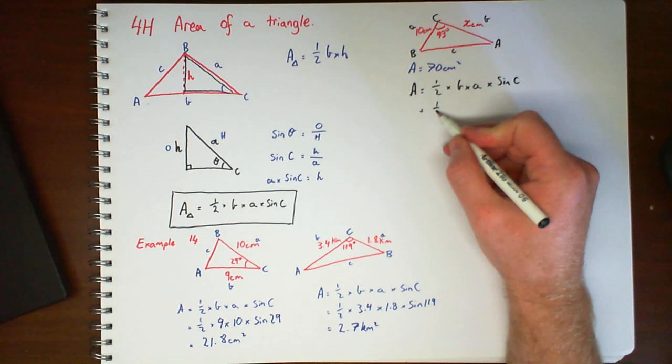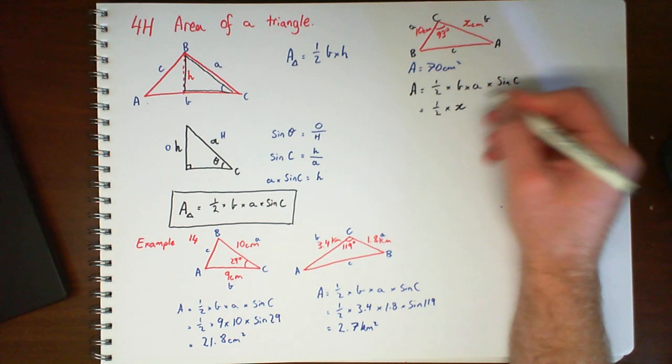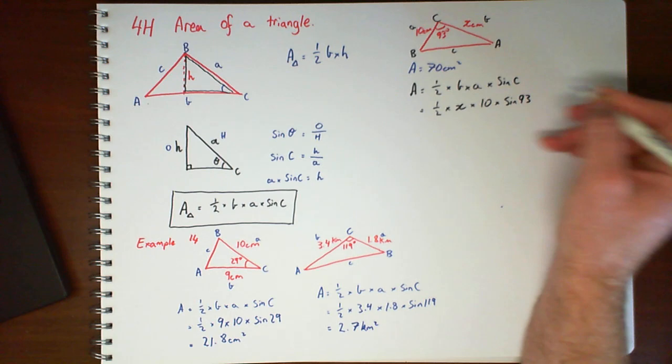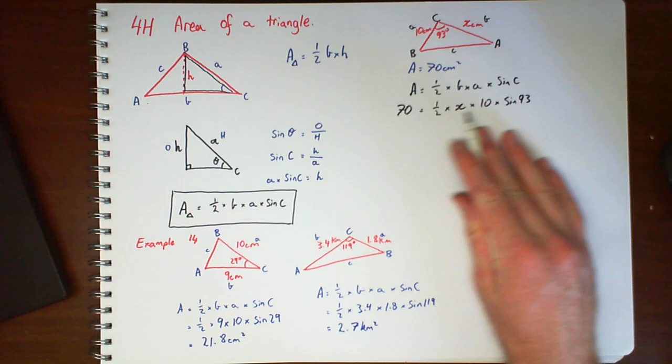Jotting down the formula. And then we've got half times, so we're looking for B, because that's X. So leave that there. We've got A and sine of 93. We know the area is 70, so we can actually say 70 is equal to all of that on the right.